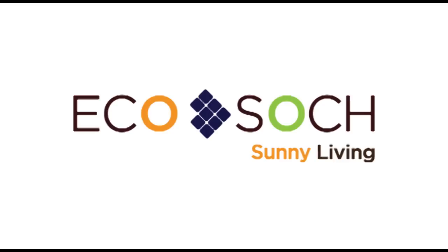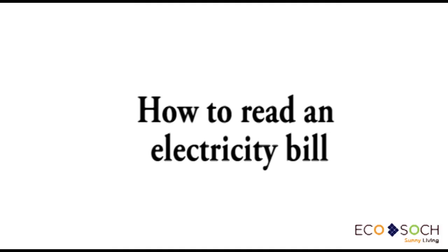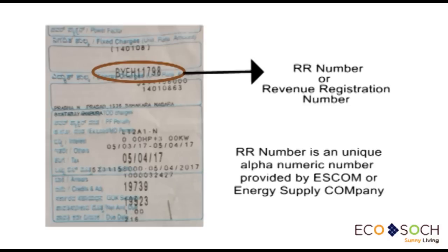Hello all. In this video, let us see how to understand the electricity bill. The first important part of the electricity bill is the Revenue Register Number, or RR number. It is a unique alphanumeric number allotted by the energy supply company for each meter for identification purposes.